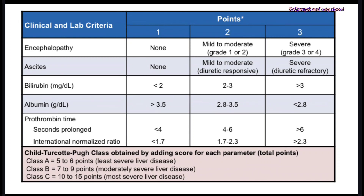Albumin is a key marker of liver function. If albumin is more than 3.5, score is 1. If between 2.8 to 3.5, score is 2. If less than 2.8, score is 3. For prothrombin time in seconds prolonged: less than 4 seconds gives score 1, 4 to 6 seconds gives score 2, and more than 6 seconds gives score 3. If prothrombin time is not available, INR can be used: less than 1.7 is score 1, 1.7 to 2.3 is score 2, and more than 2.3 is score 3.